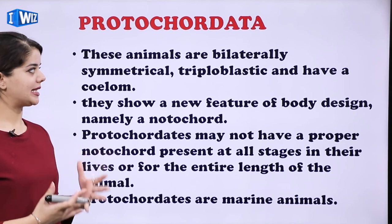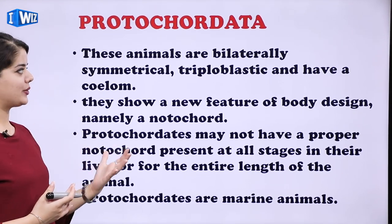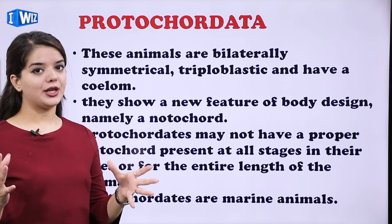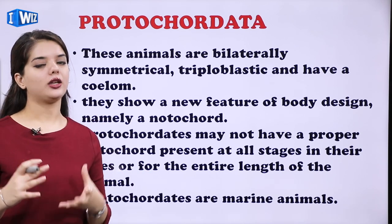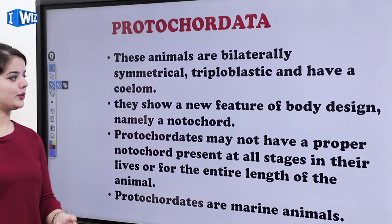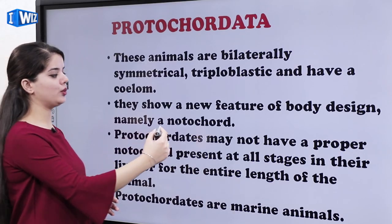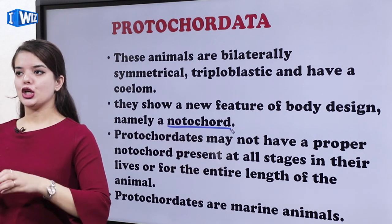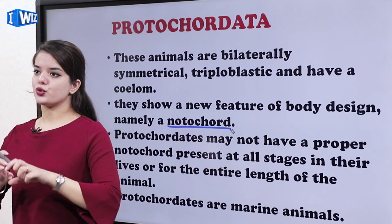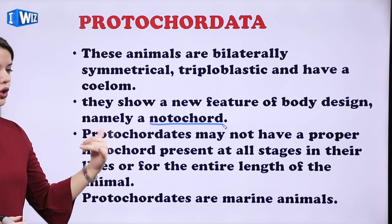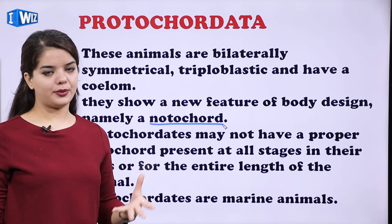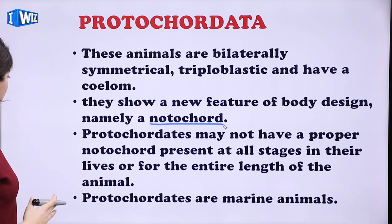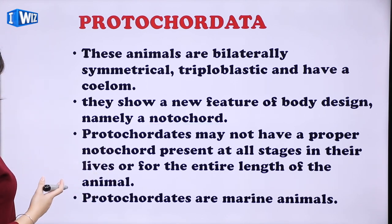Then we have Protochordata. These are bilaterally symmetrical, triploblastic, and have a coelom — matlab cavity bhi hai jis mein organs accommodate ho sakti hai. They also have a new feature called the notochord — a structural skeletal rod that supports the body. However, the notochord is not present throughout their entire life; it may be present only at some stages. Protochordates are marine animals; example is Balanoglossus.